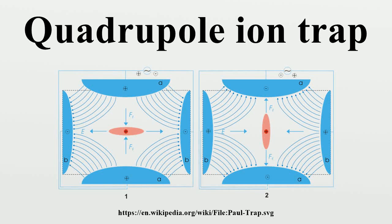A quadrupole ion trap is a type of ion trap that uses dynamic electric fields to trap charged particles. They are also called radio frequency traps or Paul traps in honor of Wolfgang Paul, who invented the device and shared the Nobel Prize in Physics in 1989 for this work.